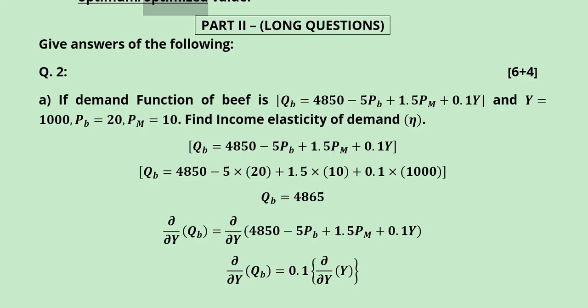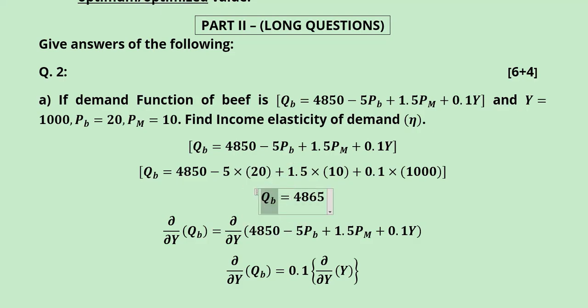Then we come to the long questions. The first one is about the demand function of beef, which is given. It is an elaborated demand function. In this elaborated demand function, we also have the price of the alternative, that is mutton, and we also have the income. So the various values — PM, PB, and Y, the income, price of beef, and price of mutton — are given. Using these values, we can find the value of quantity demanded of beef, which is equal to this, once we substitute all of these values.